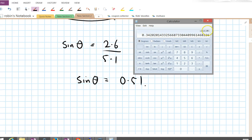20 is too small because it's 0.34, we're looking for 0.51. Let's try 30. That's 0.5 exactly. So sine of 30 is 0.5, that's a little bit too small. Let's try 31 degrees. 0.515, that's too big.